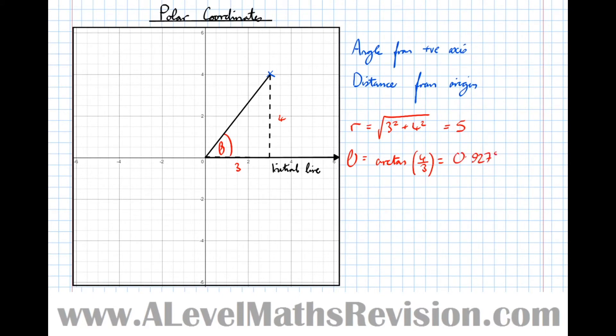So the way we define this point here would be r comma theta equals 5, 0.927, and these look like coordinates.